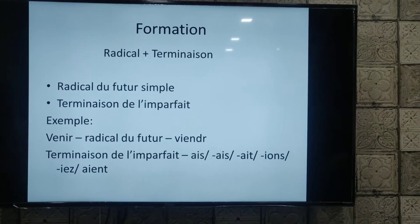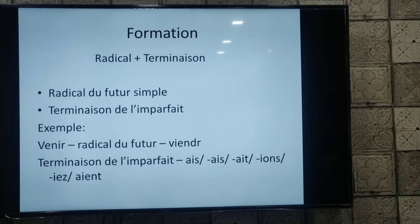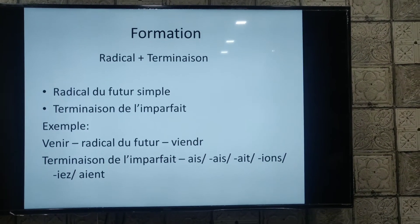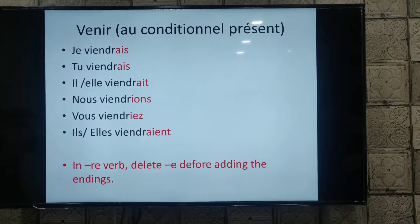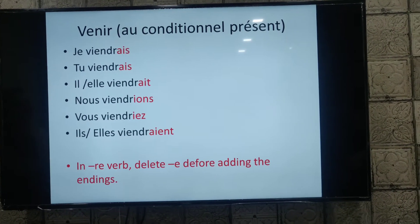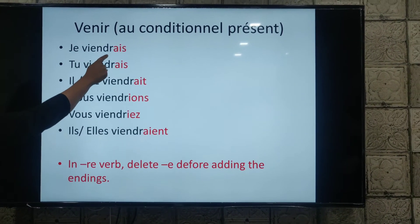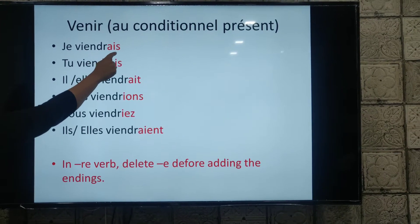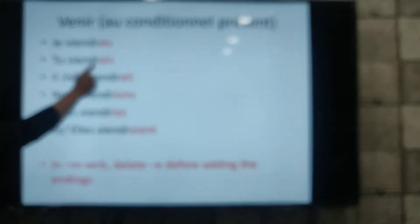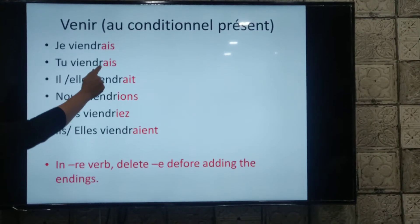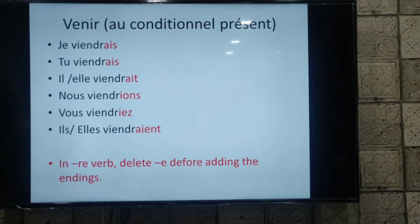And with viendri- we have to put the ending of imparfait, which is -AIS, -AIS, -AIT, -IONS, -AIZ, -AIENT. So the tense will be formed in such a way: viendri- is the radical du futur simple, and we add the terminaison de l'imparfait.